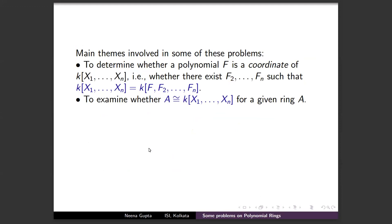The fundamental problem is: given a polynomial ring over a field k with variables x₁, …, xₙ, and a given polynomial f, when will f be a coordinate? That is, can you find n−1 other polynomials f₂, f₃, …, fₙ such that the polynomial ring k[x₁, …, xₙ] is generated by f, f₂, …, fₙ?